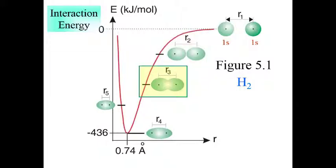At r3, the nuclei are closer still, and the electron clouds now begin to overlap. The interaction is stronger, and the energy is more negative.